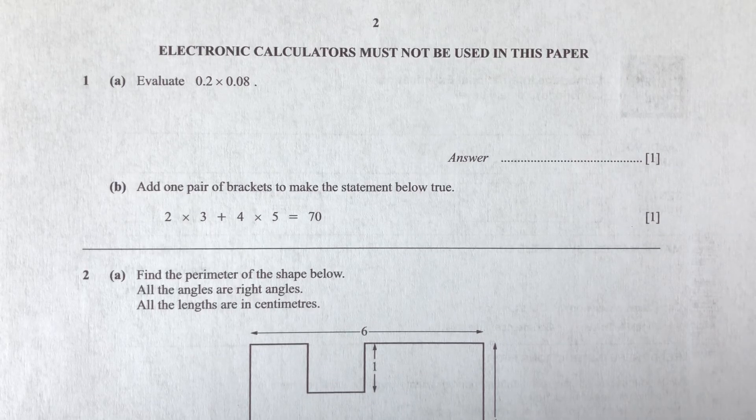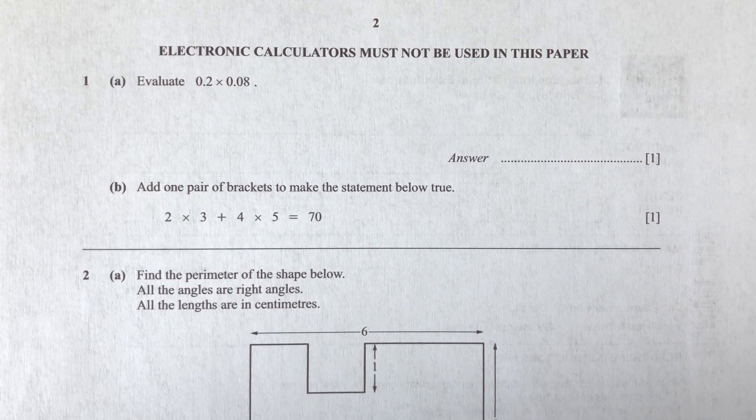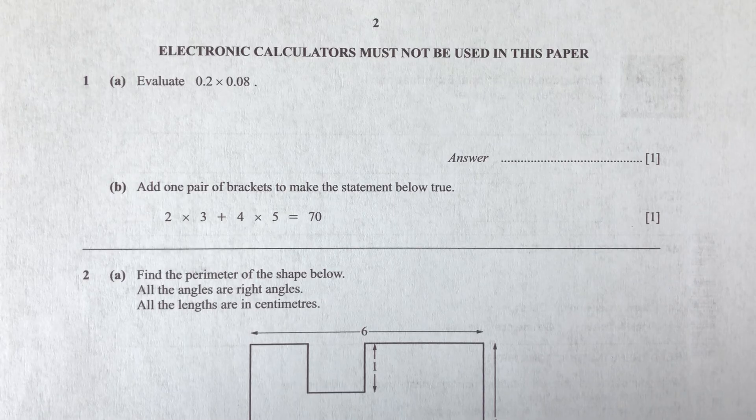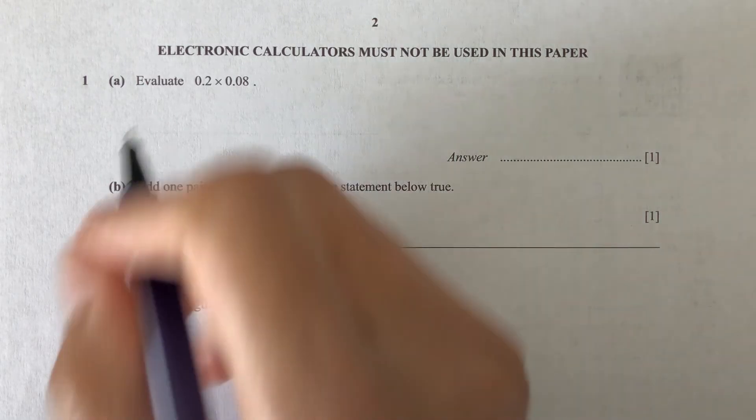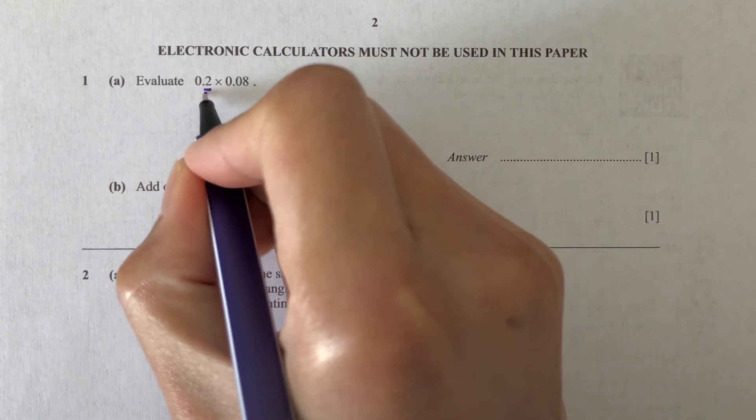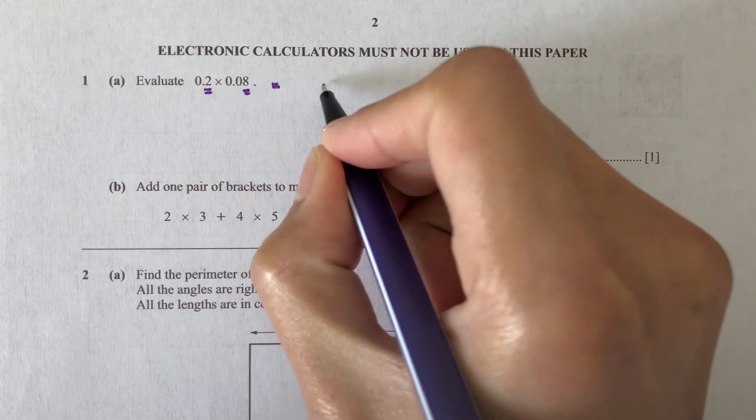Question number one, part A. Evaluate 0.2 times 0.08. So the trick that I use is I first multiply those two, which is 2 times 8 is what? Is 16.